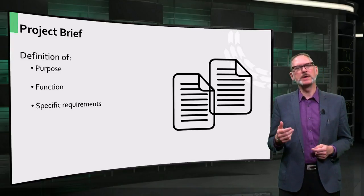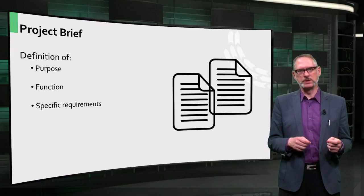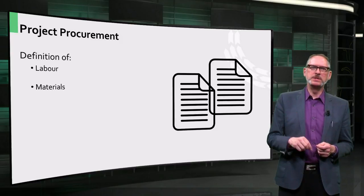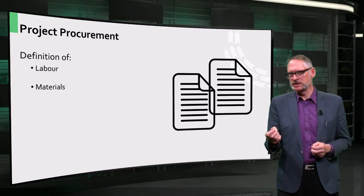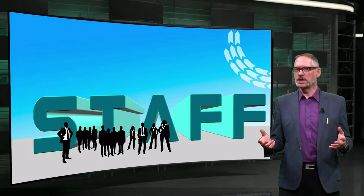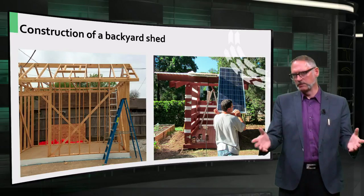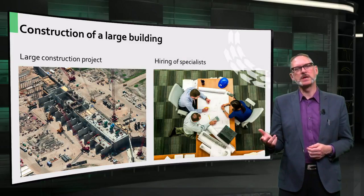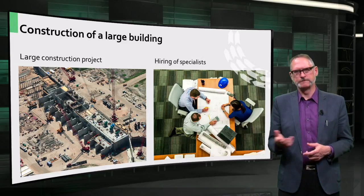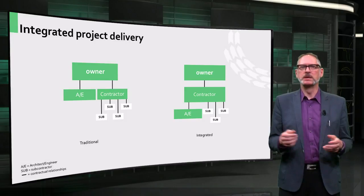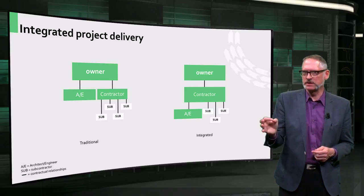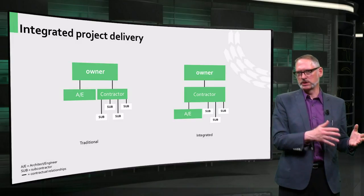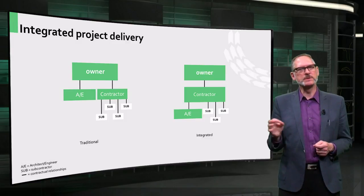Once the scope is determined, you can decide how best to procure the project. That is, you will determine in what form you will purchase the labor and the materials required to realize the project. You need to select the right people to fulfill the tasks and activities that together will deliver the building. For a garden shed, you might choose to buy a kit at the local garden store and assemble it yourself or with friends. For a larger building, you might hire an architect and then use the architect's designs to make a contract with a builder. Most projects are organized traditionally, meaning that the client contracts design services — that is, the architect and engineers — separately from the construction services. This allows the tendering of the contractor on the basis of the design as worked out by the architect and engineers, but divides the responsibility for the design from construction.